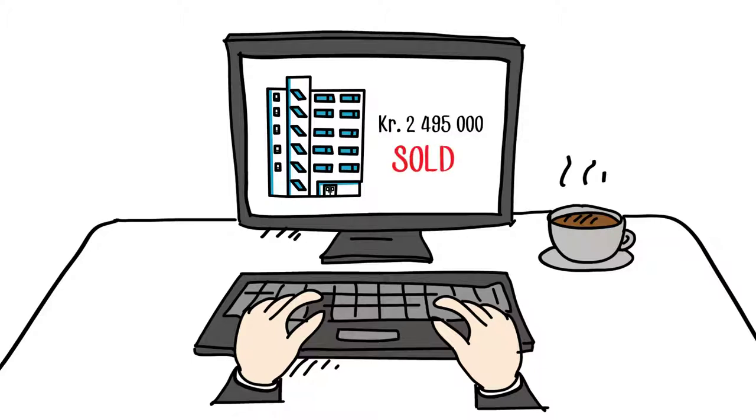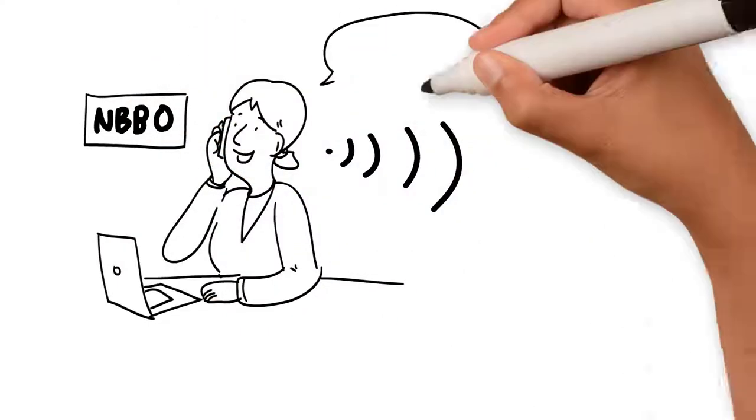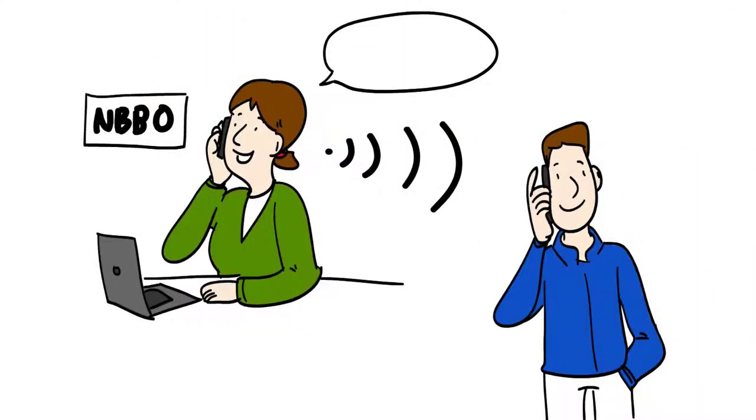The price is set and Thomas is contacted by NBBO. They ask whether he still wants the property because he was first in line and can have right of first refusal on the property at the agreed price.